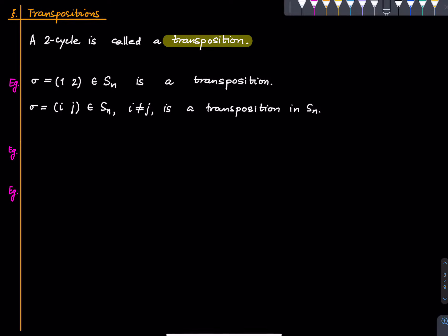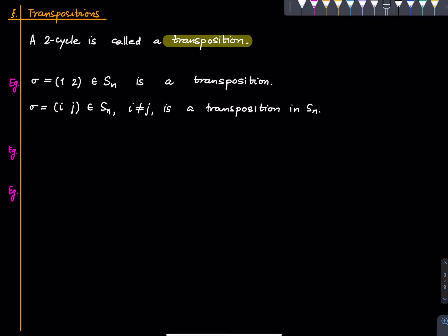Let's see an example. This particular thing is a transposition — of course it is a two-cycle. More generally, a transposition looks like (i, j) where i is not equal to j. Whenever we write this we automatically mean i is not equal to j, but I am just emphasizing it here. So these are all the transpositions basically; any transposition will look like this for some i not equal to j.